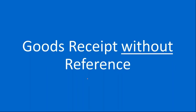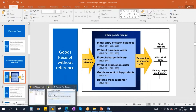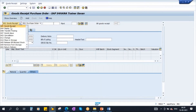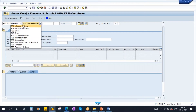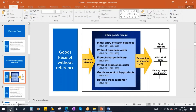Good Receipt without reference means without any reference document such as a purchase order, production order, reservation, or inbound delivery. Here we don't have any reference document. Whenever you do any transaction in MIGO, first you select the activity you are doing, then you select the type of reference document — but here there is no reference document.